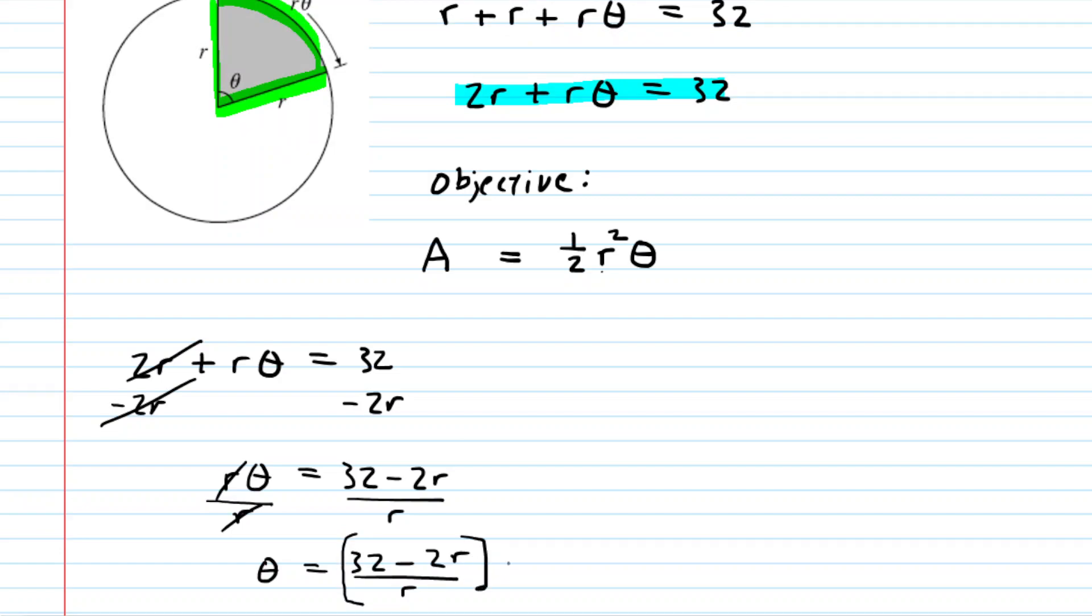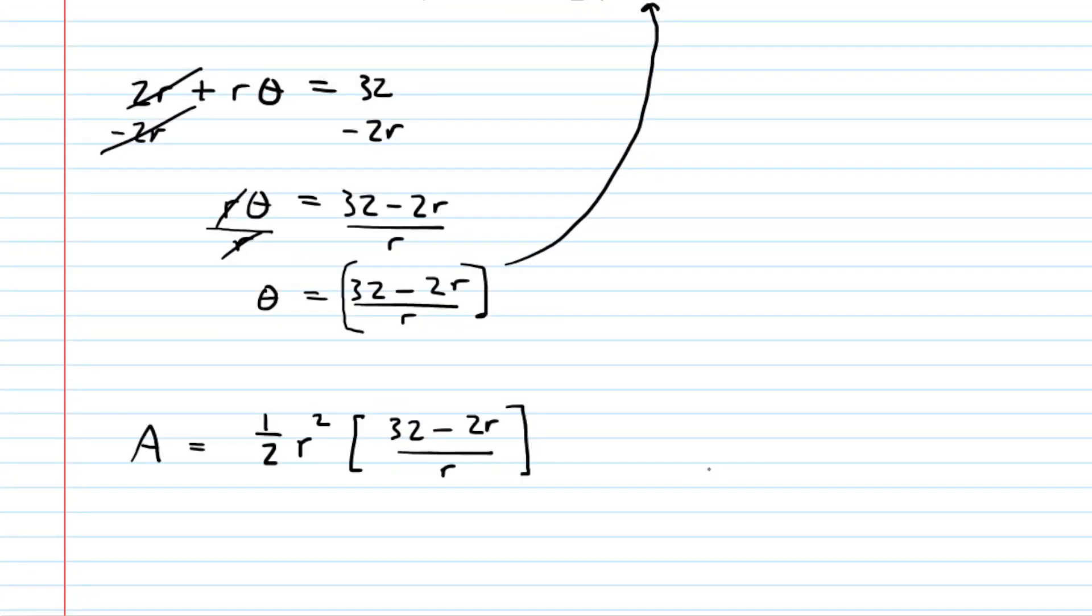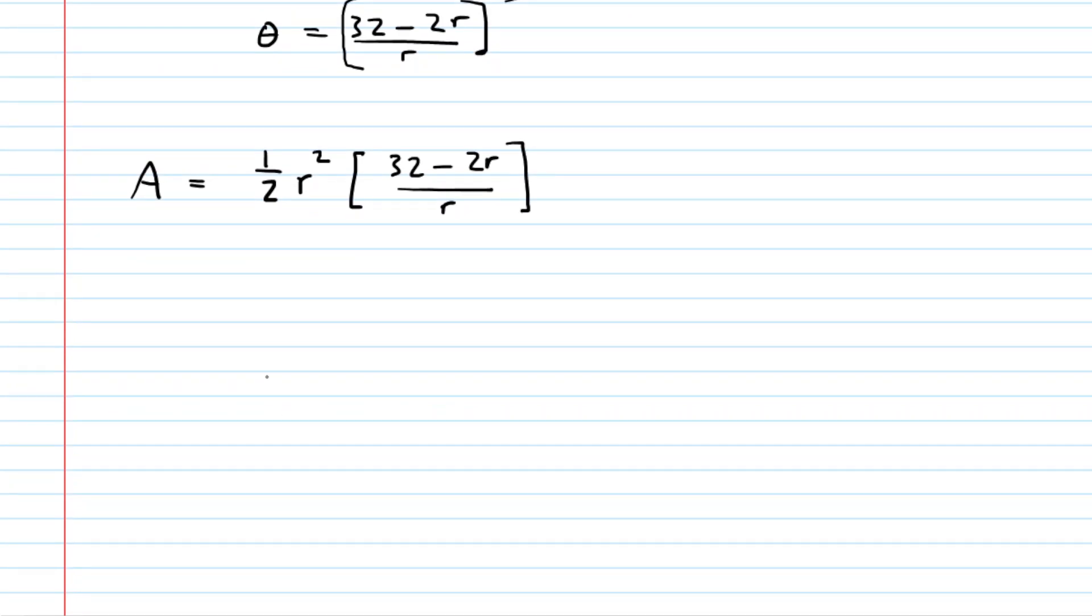What we do is we take that expression and we plug it into the theta of our objective equation. And so when we do that, we will have the following. And if you notice, now your objective equation is in terms of just a single variable r, which makes the mathematics a lot easier.